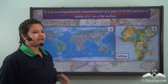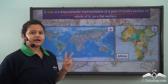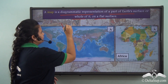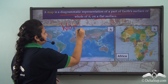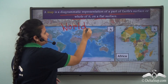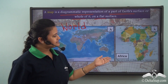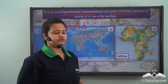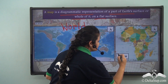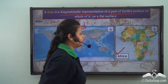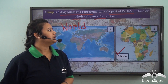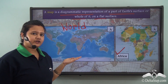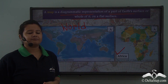Now here we have two maps. The first one shows the entire world, while the second one shows only a part of the earth's surface — that is the continent of Africa. So you see, maps can represent the entire world or a part of it.